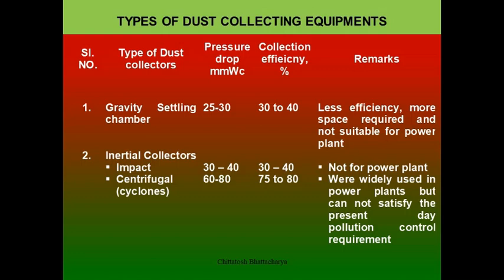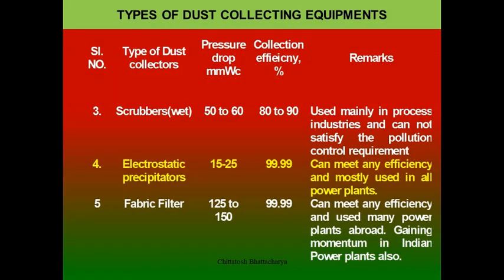There are different kinds of dust collecting equipment which are installed depending upon the particulate matter size, their percentage of collection required and how much emission can be allowed. There are gravity settling chambers, inertial collection which may be centrifugal type or scrubbers, electrostatic precipitators, and fabric filters. All these can be employed depending upon the collection efficiency, economic criteria, and how much pressure drop is allowed across the flow passage.